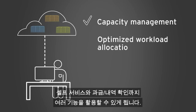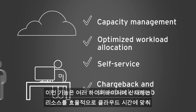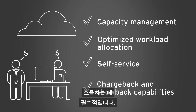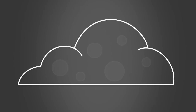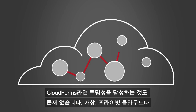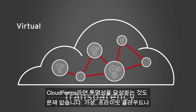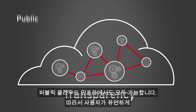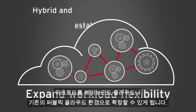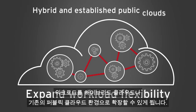Optimized workload allocation, self-service, and chargeback showback capabilities are required for effective cloud orchestration of resources across multiple hypervisors. With Red Hat Enterprise Virtualization and Red Hat CloudForms, you can achieve transparency across virtual, private, and public cloud infrastructures, empowering users to flex and expand workloads into hybrid and established public cloud environments.